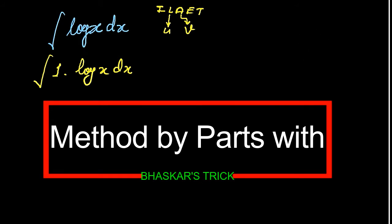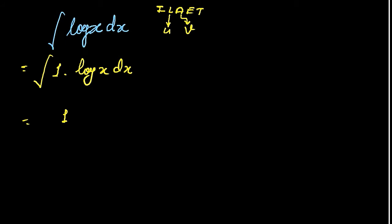Now we can easily apply method by parts. We can write it like this. This is not arranged actually, so we'll have to arrange it again. So it will be log x into 1 dx. Now it is in the form of u into v.